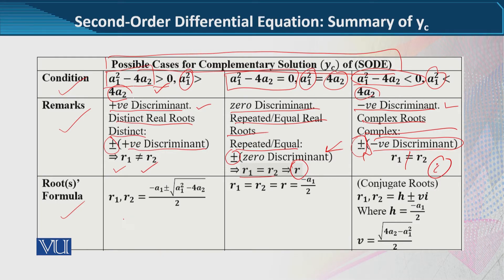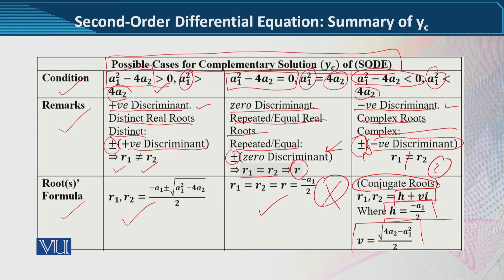جو formula ہے وہ distinct real root case میں یہ ہوتا ہے — یہ بھی ہم نے solve کیا ہوا ہے. Real repeated root case میں roots کا formula یہ ہوتا ہے جہاں plus minus کے بعد کی term zero ہو جاتی ہے. اور complex roots، جنہیں ہم conjugate roots کی form میں لکھتے ہیں، وہاں پر alpha اور epsilon کی values کے ذریعے roots ان دو formulas سے نکالے جاتے ہیں.